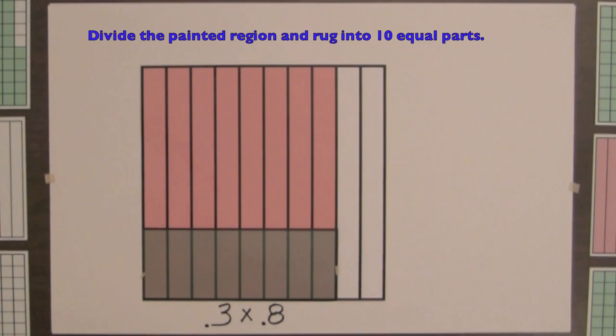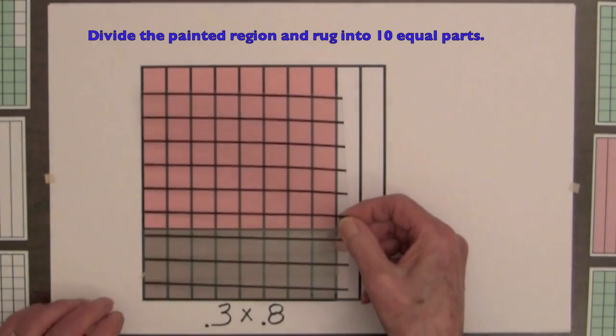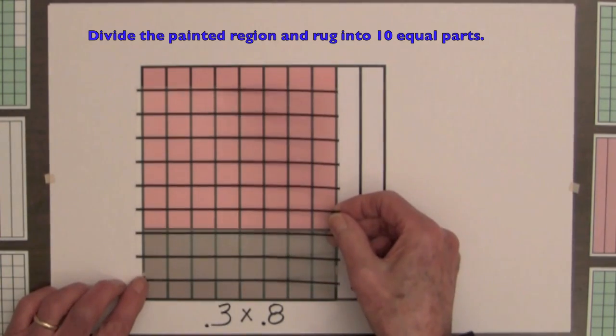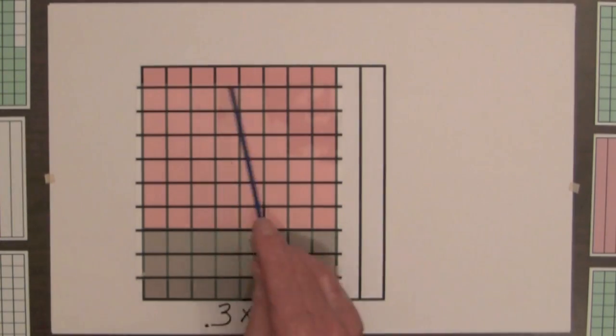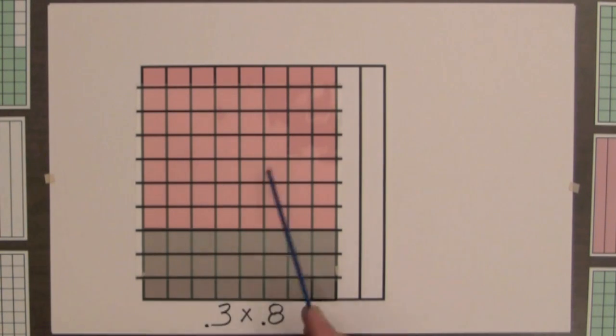We will divide the 8 tenths, the painted region, into 10 equal parts. So we have 1, 2, 3, 4, 10 equal parts. And notice that the rug is 3 of these 10 parts.